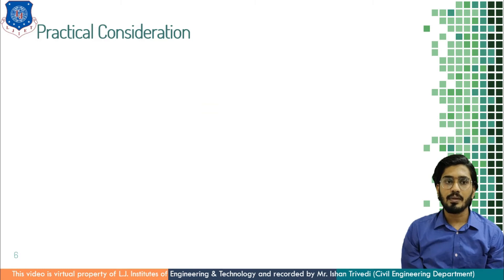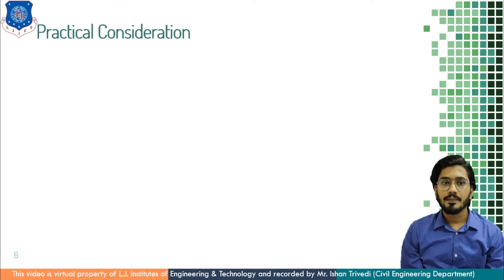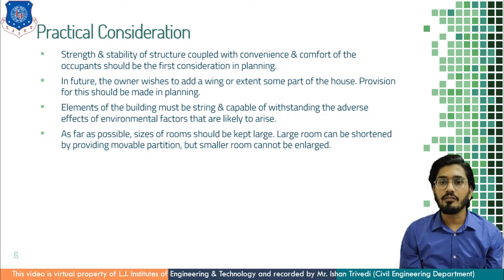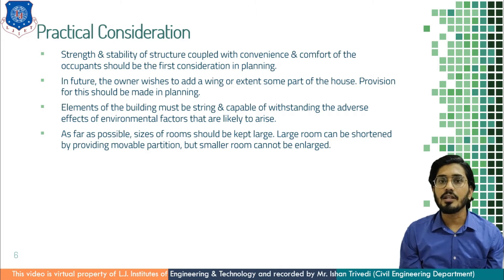The next principle of building planning is practical consideration. Above all these principles of building planning, practical considerations are those which are kept in mind while planning a residential building for future consideration. While planning a building, the first consideration is the strength and stability of the structure inclusive with convenience and comfort of the occupants. The building has to be designed in such a way that you must not have to compromise the strength and stability as well as convenience and comfort of inmates. In future, if the owner wishes to add a wing or extend some part of the house, provision for this should be made while planning the building.